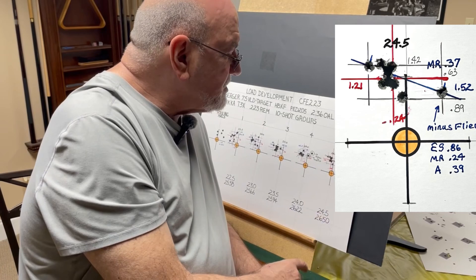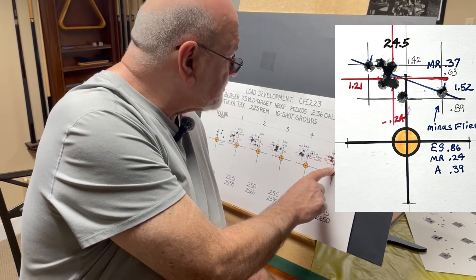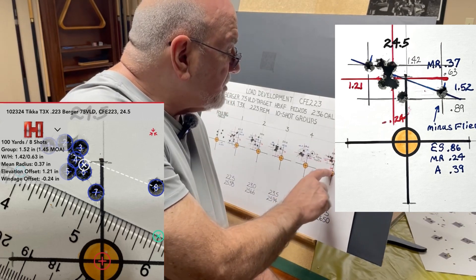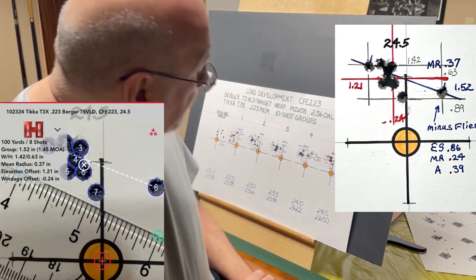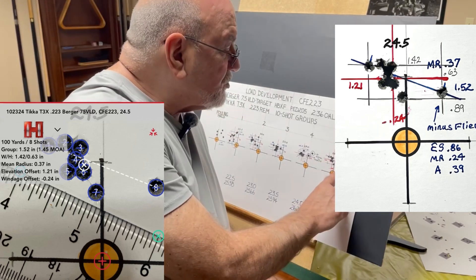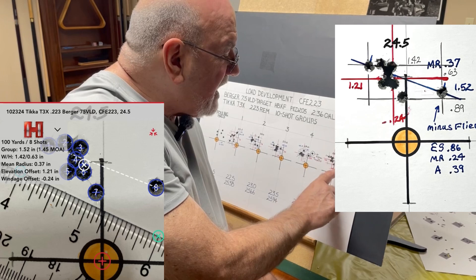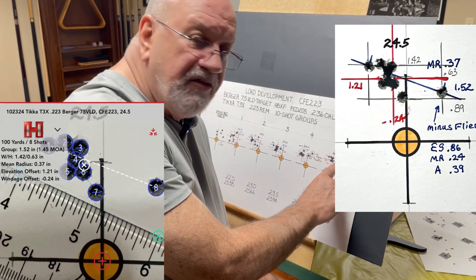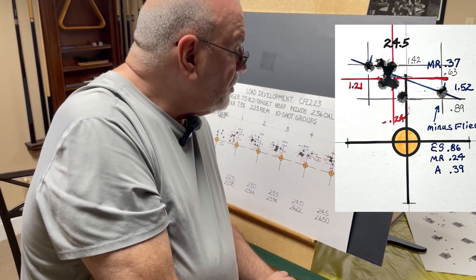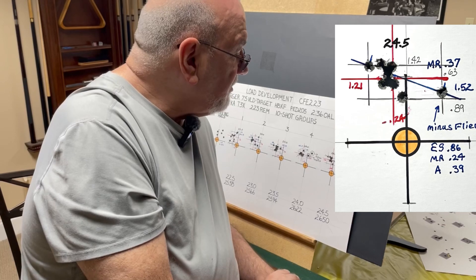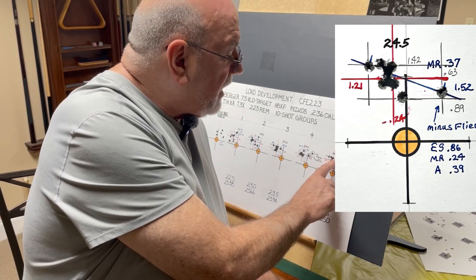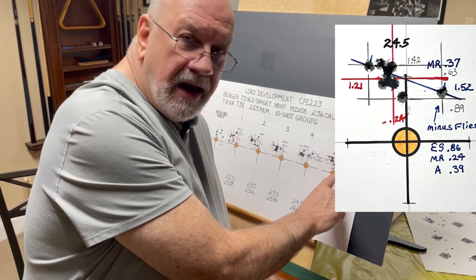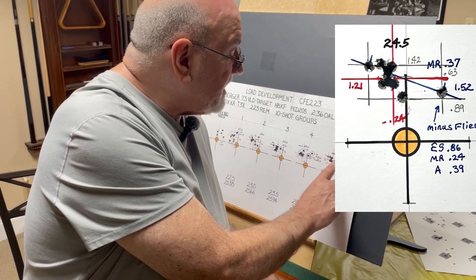When we get to 24 and a half grains, now we're only measuring eight shots because two of those were accidentally shot on target number four. When you look at 24 and a half grains this shot pretty well also. We do have an extreme spread of 1.52 because we have a flyer over here off to the right. But we have a mean radius even with that of 0.37 which gives you an average group size of 0.74. We've got a width and a height of 1.42 and 0.63 which gives you an area of 0.89 inches, even with that flyer.